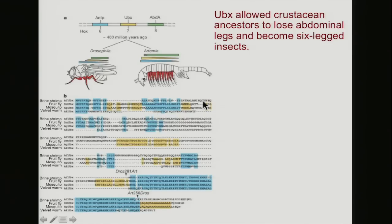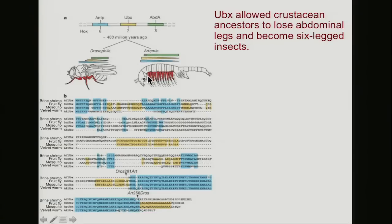Modern day invertebrates — whether they're brine shrimp, fruit flies, mosquitoes, or velvet worms — all carry this UBX gene, and there are different precise forms of the gene in different species. In the six-legged ones, like fruit flies and mosquitoes, it's very similar, as shown by the brown regions. But there has been alteration from the earlier form typified by the brine shrimp. There's a lot of change in the UBX gene from the crustacean ancestral state to the modern insects.